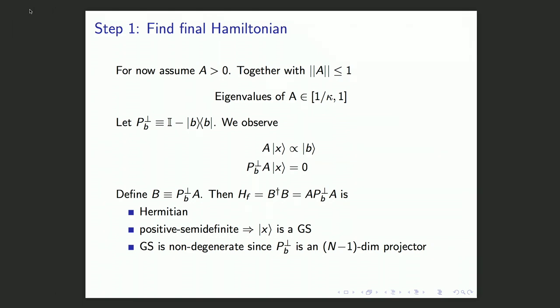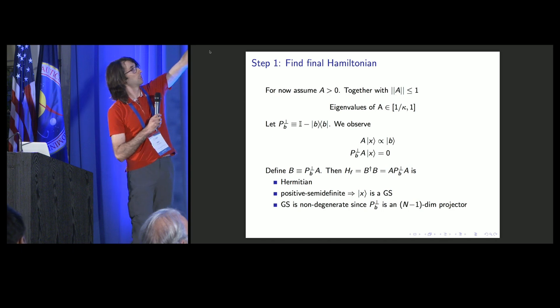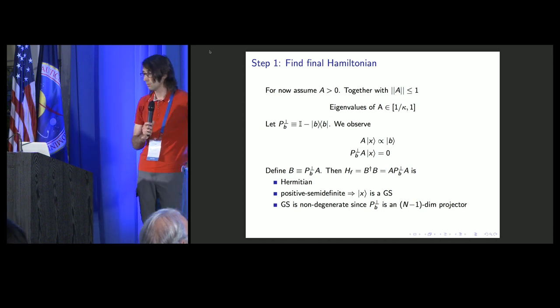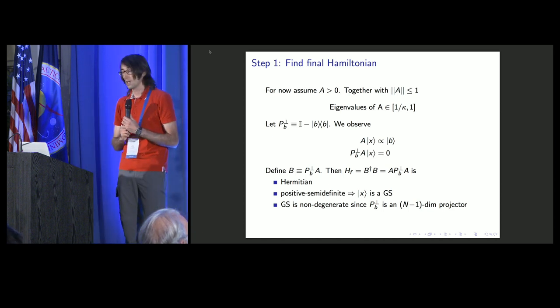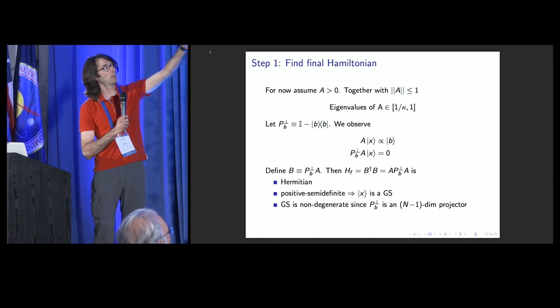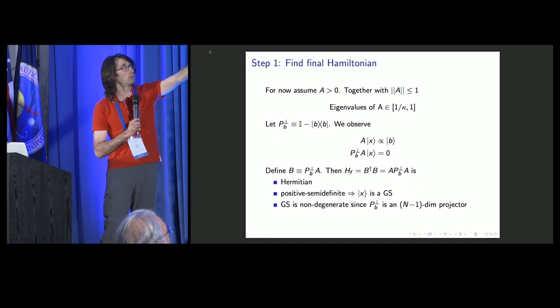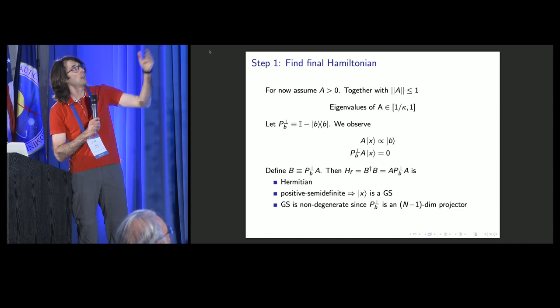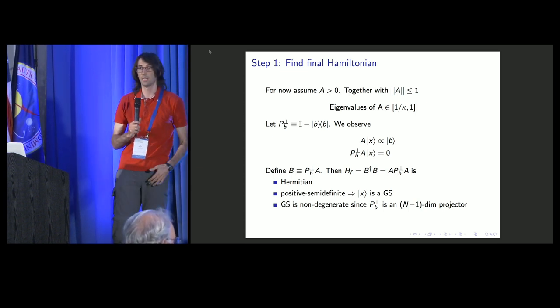First, I will describe how we came up with the final Hamiltonian whose ground state will be X. For now, for presentation purposes, assume that A is a positive matrix. Let's define the projector P_B perp, which projects onto the subspace orthogonal to the one spanned by the state B. I've written here the linear system equation A X equals B. I multiply both sides from the left by this projector, which effectively kills the state B. So that now this operator I rename B has as an eigenstate the state X.